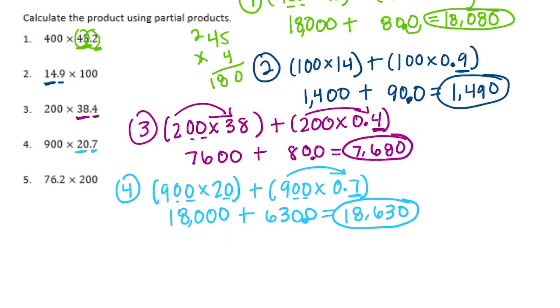And lastly, number 5, we have 76.2 times 200. So I'm going to split those up. 200 times 76 plus 200 times 0.2. So let's do 2 times 76. Well, 2 times 75 is 150, so 2 times 76 would be 152 with 2 zeros, so 15,200.